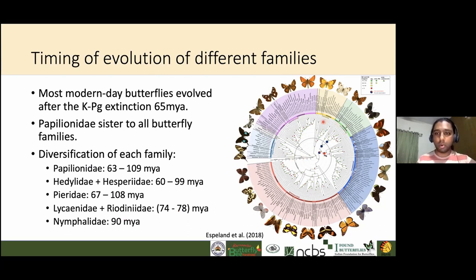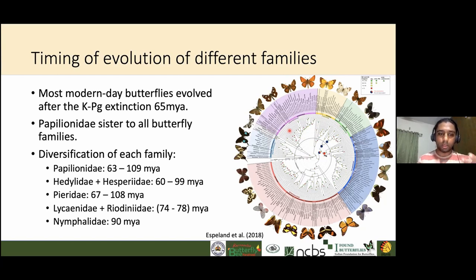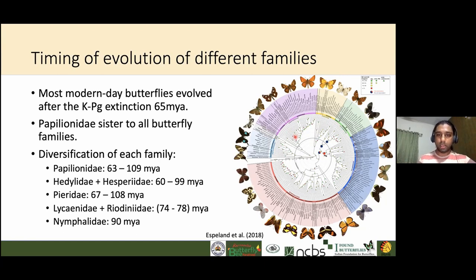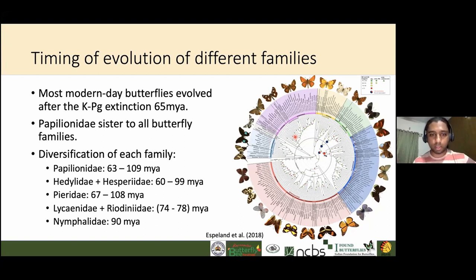How do biologists arrive at these dates? They collect specimens, extract DNA, look at genetic sequences, and build a relationship tree. Essentially, you compare how similar or different sequences are from one another, then use statistics to come up with estimates of how long ago each butterfly family originated.